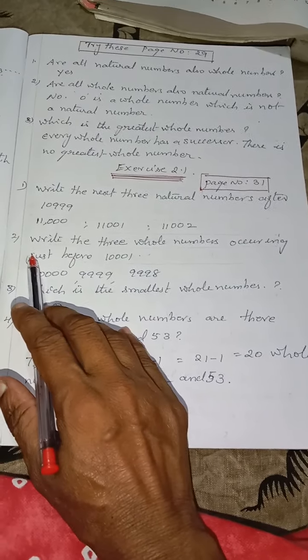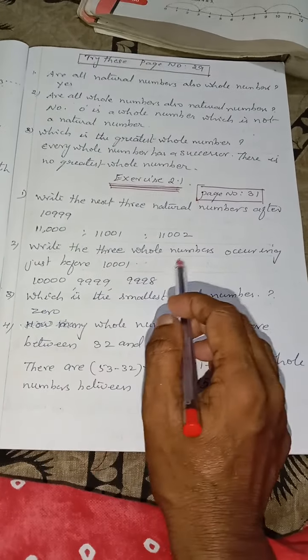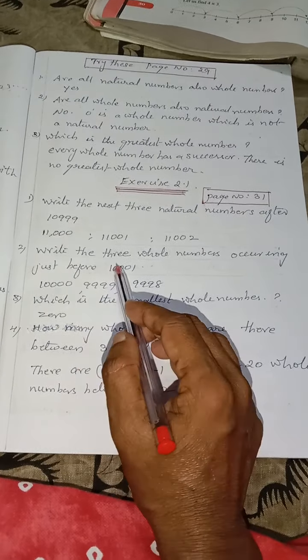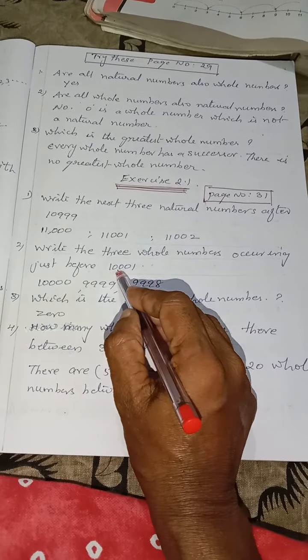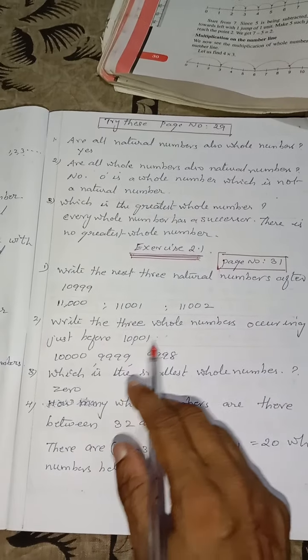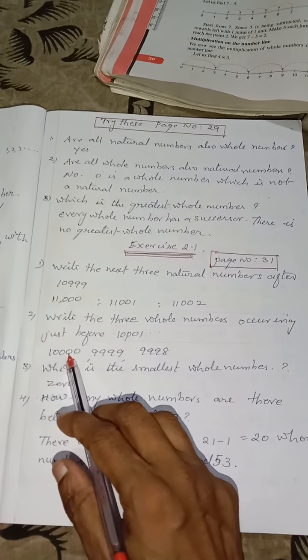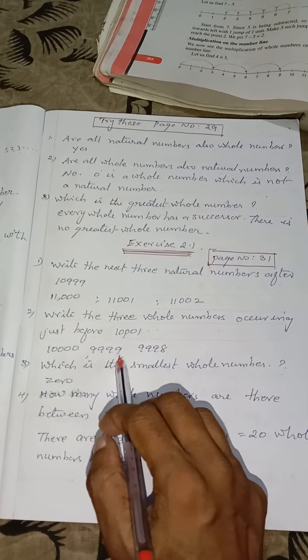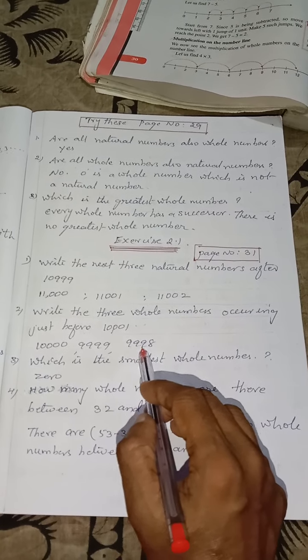And second problem. The 3 numbers just before 10,001. Which are the 3 numbers just before 10,001? It is 10,000, 9,999 and 9,998.